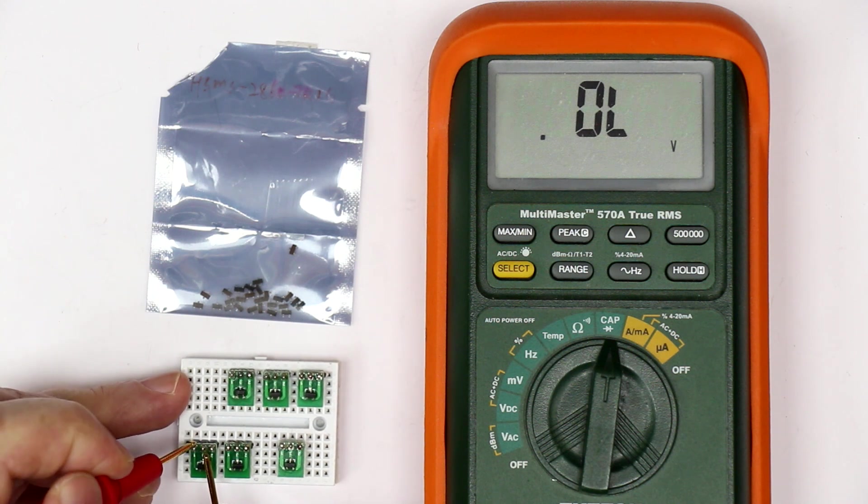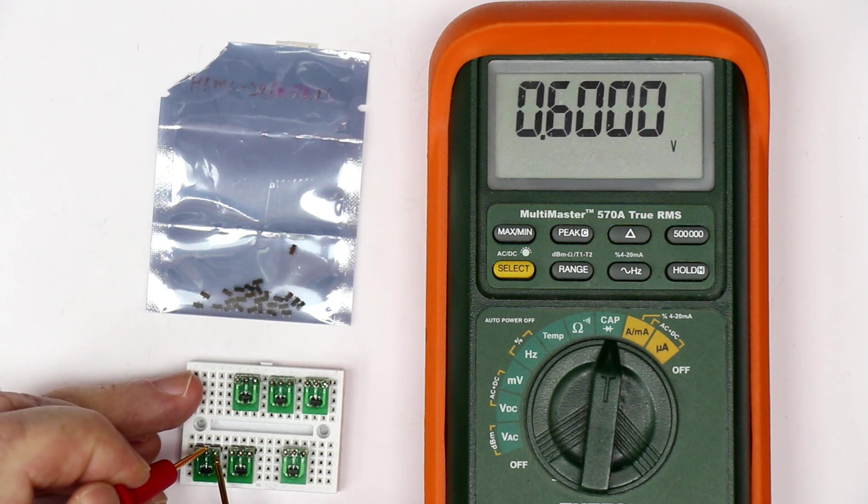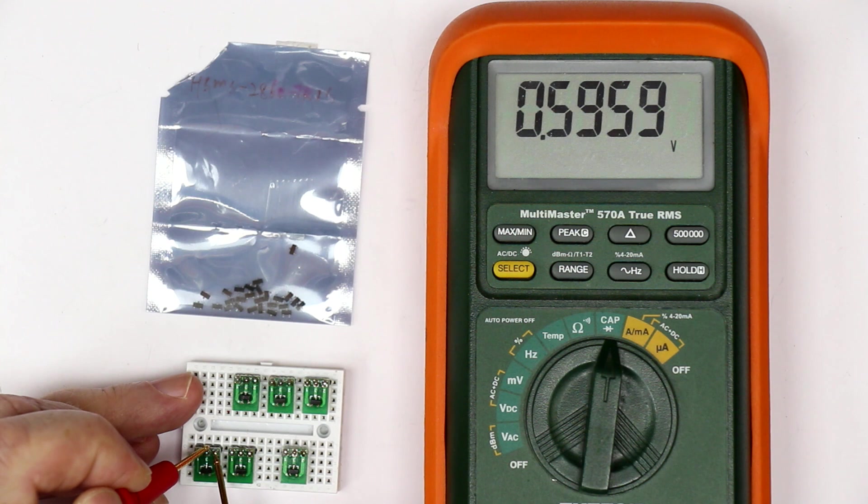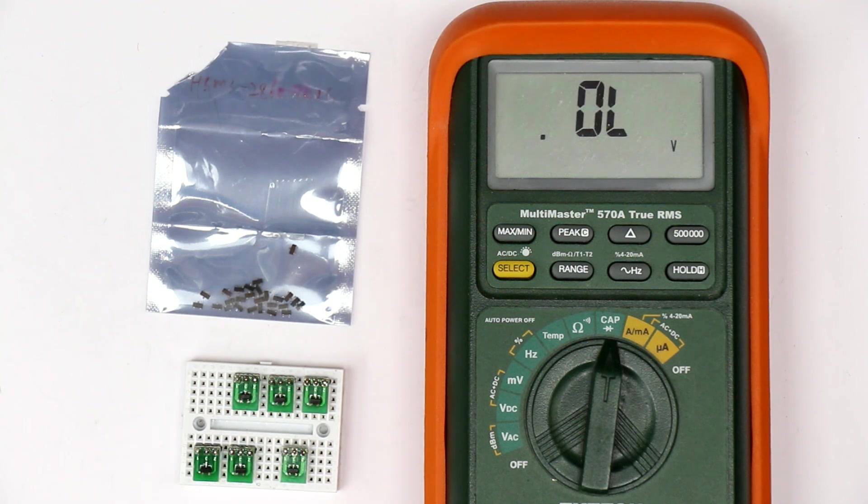We get nothing. So let's check from pin 3 to 2 and from pin 2 to 3. With a completely different connection we get 0.6 volts, so clearly this is not a Schottky diode.